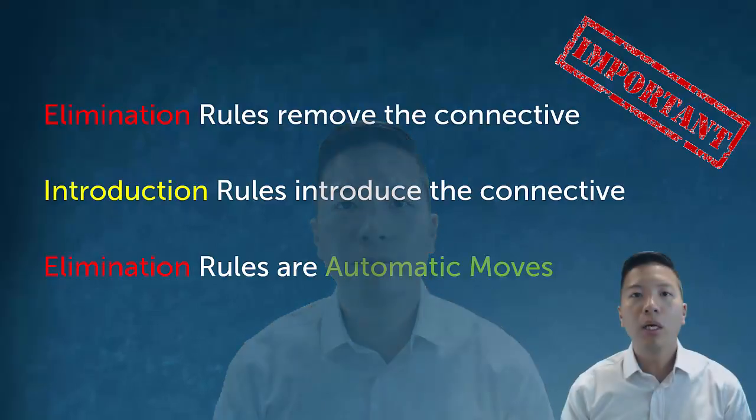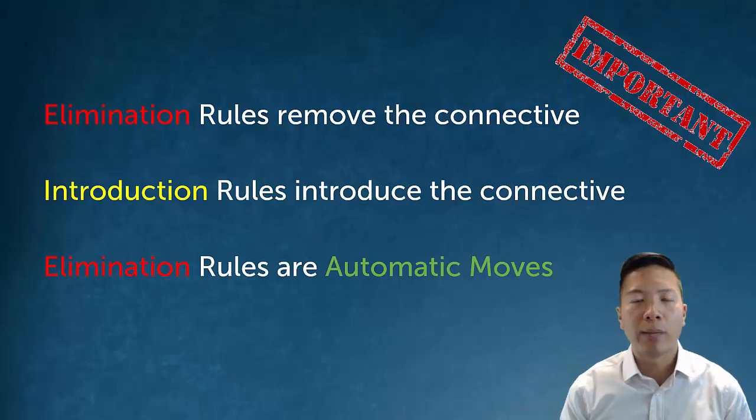We've covered the basics of derivations using only four rules: modus ponens, modus tollens, double negation, and repetition. These are the rules for negation as well as the conditional. What we're missing are our basic rules for conjunction, disjunction, and biconditional, and that's what we'll learn now.